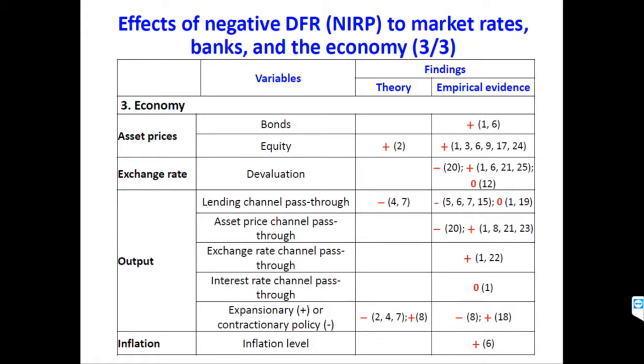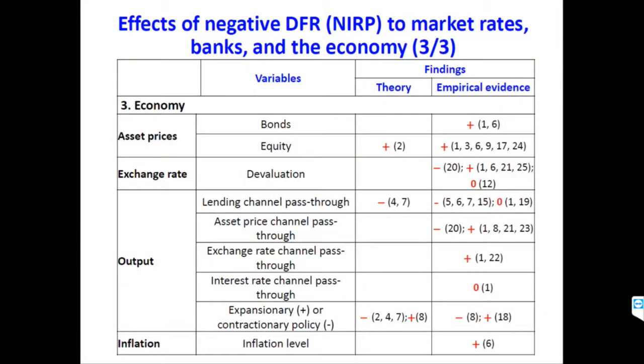Regarding the overall economy: asset prices go up; the exchange rate is generally devalued by NIRP across four studies. The lending channel pass-through is generally effective. The asset price channel pass-through to output is more mixed. The interest rate channel pass-through has curiously little empirical evidence. In sum: effects on rates are unambiguous other than for household deposit rates; effects on the broader economy are more ambiguous; and effects on banks' financial positions are unambiguously deleterious.